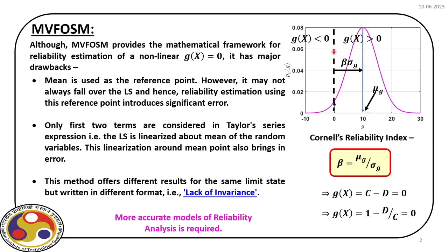We assume that g follows a normal distribution, so we end up with a pink line representing the probability density function of g. Because this is normal, it is symmetric about the central point, which is mu of g, the mean value of g. The black vertical dotted line represents the limit state where gx equals 0, dividing the entire space into two regions — failure and safe — depending on whether gx is less than or greater than 0. The distance between the 0 point and mu g is beta times sigma g, so beta equals mu g divided by sigma g. This non-dimensional number is the reliability index, first proposed by Cornell, so we call it Cornell's Reliability Index.